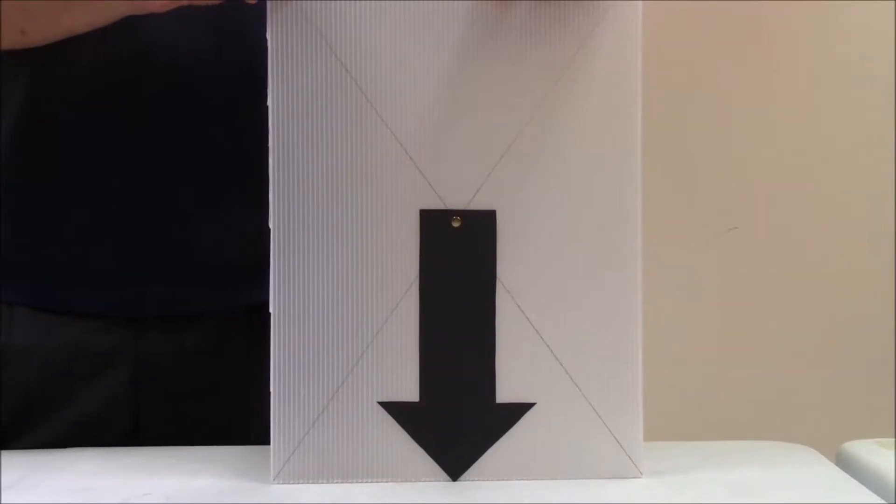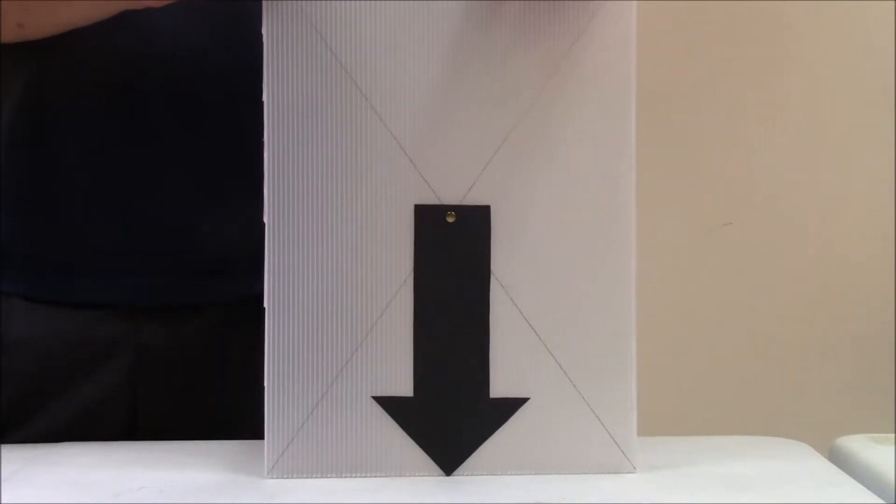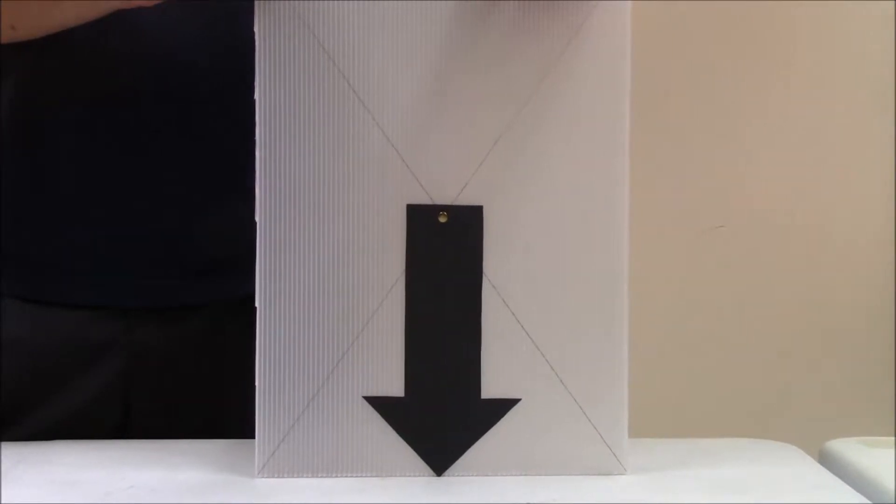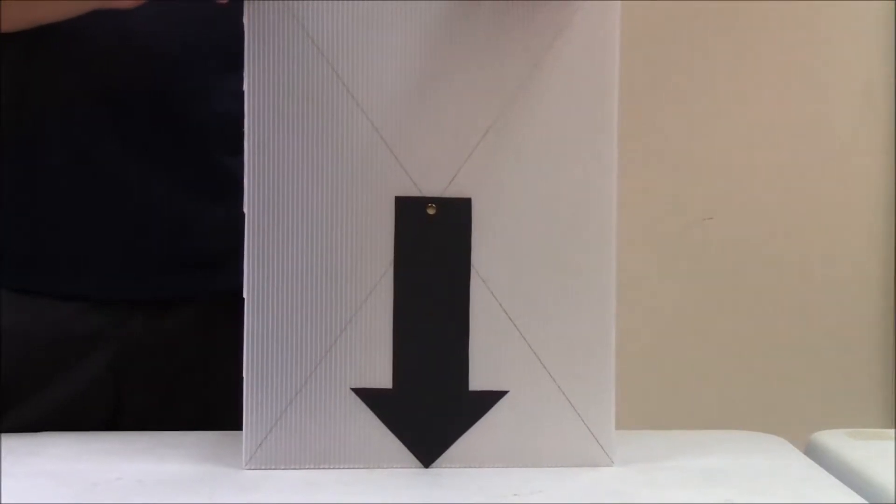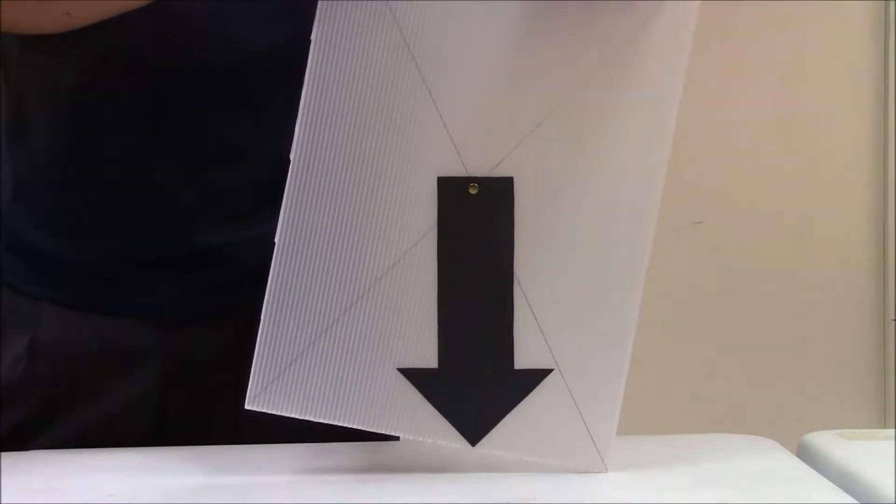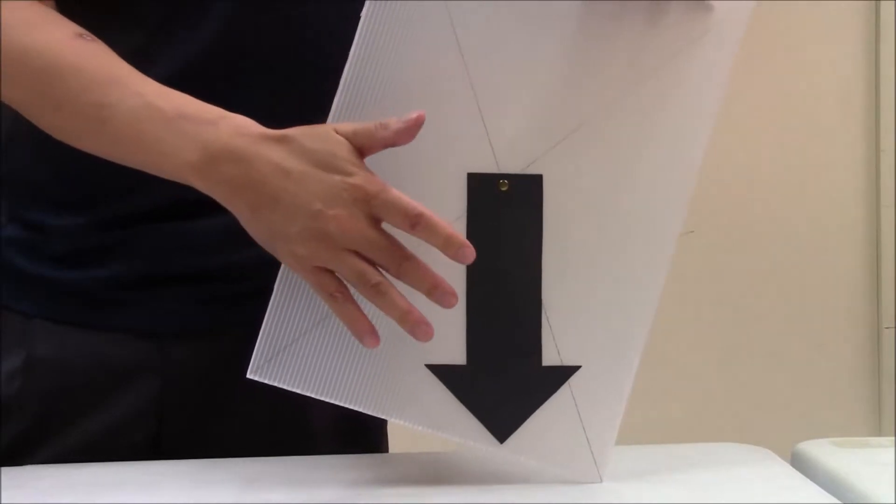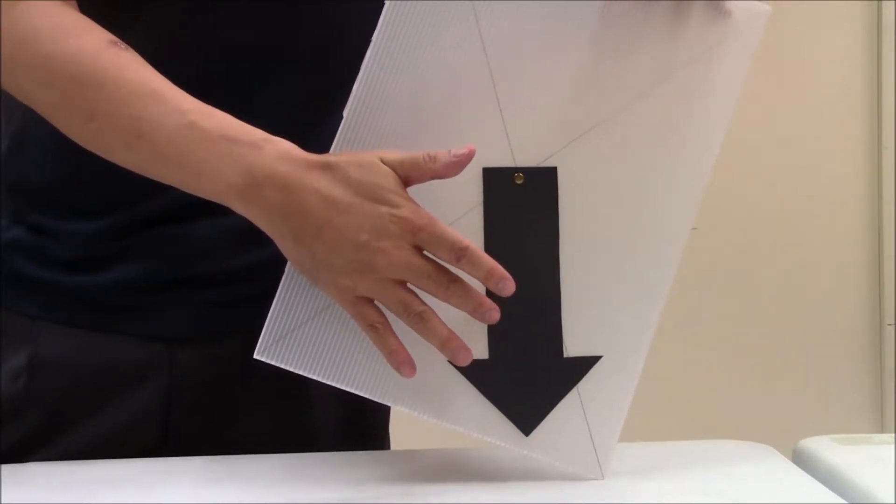We will be examining three different conditions related to the tilting of the cardboard. First, we will give a push such that it will have a slight tilt to the right as shown. Take note that the line of weight is on the left of the pivot.